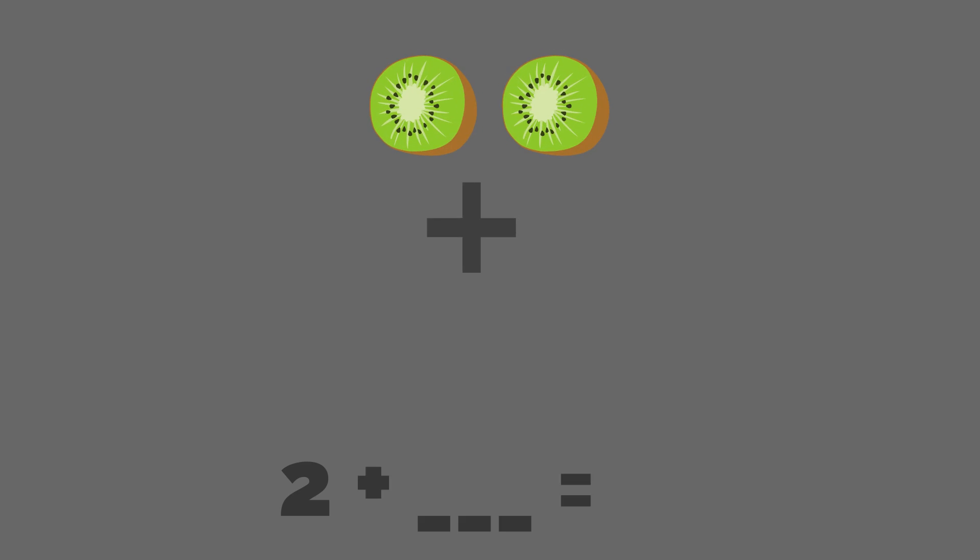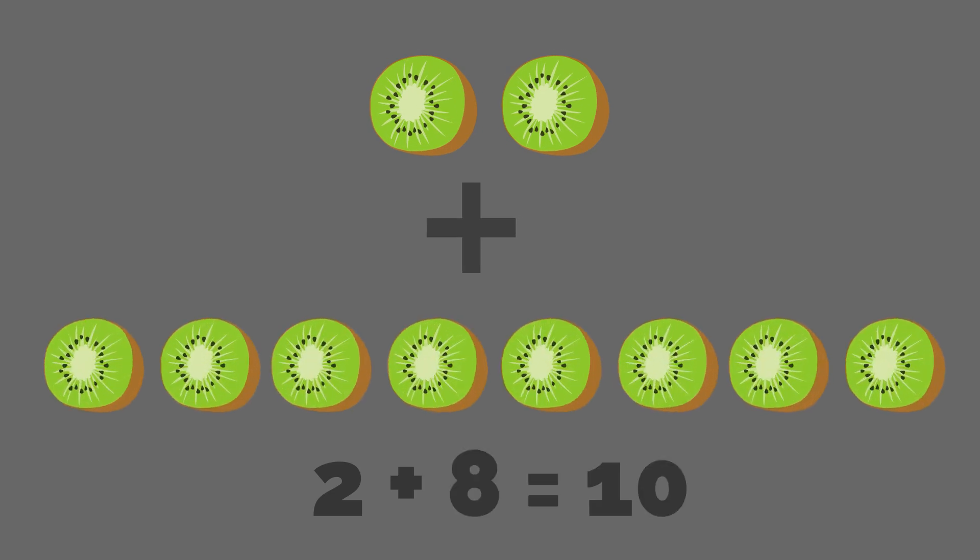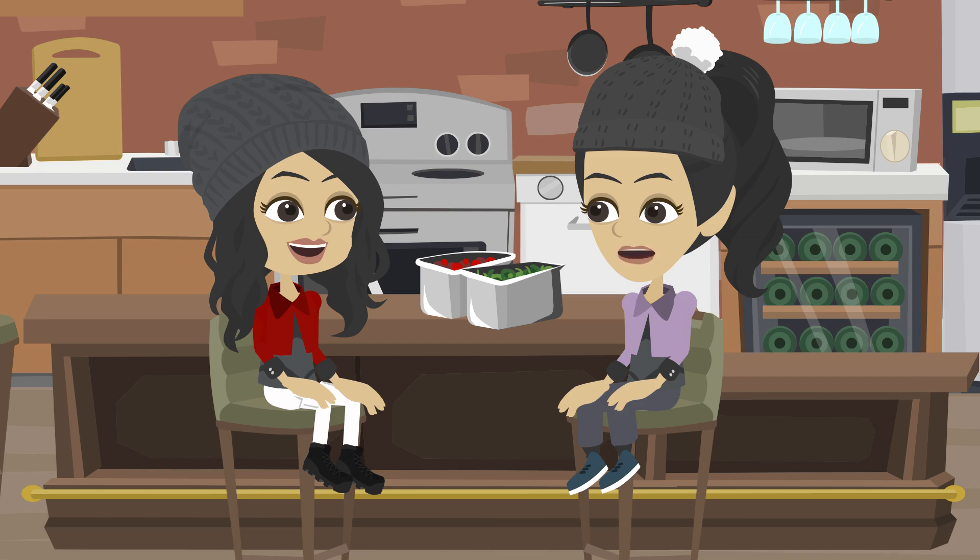2 fruit slices plus dash equals 10. 8! It's a tie! Our snack bowls are perfect, 10 items each. We did it! We solved every addition fact up to 10 and made the best snacks ever!